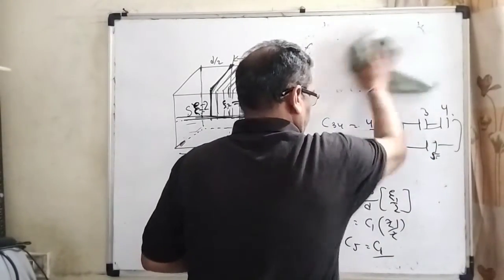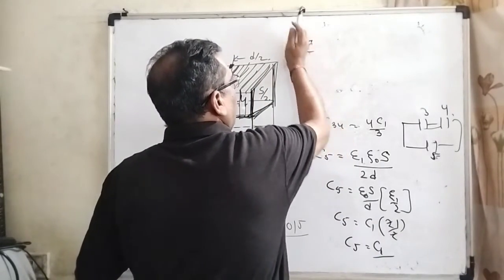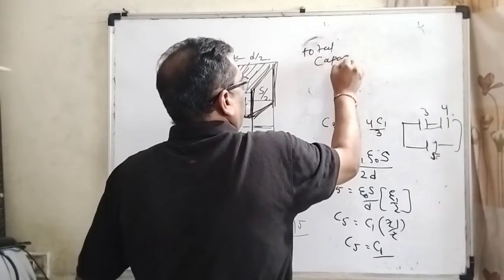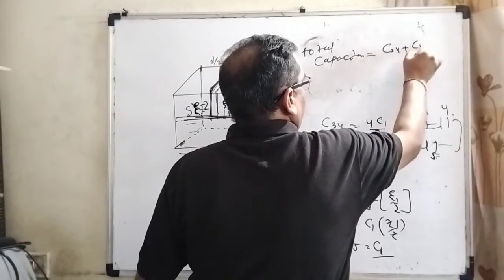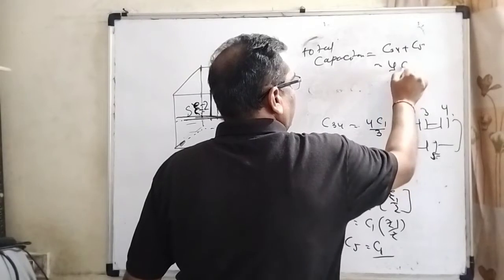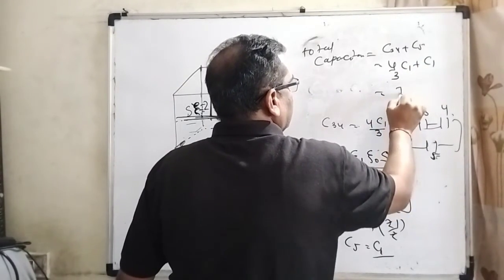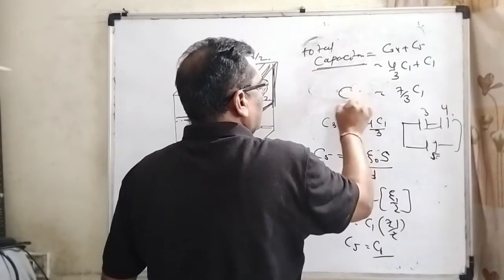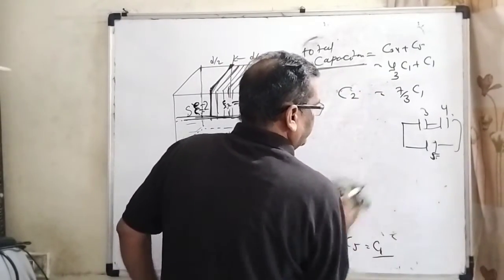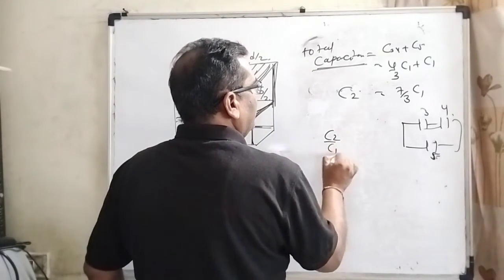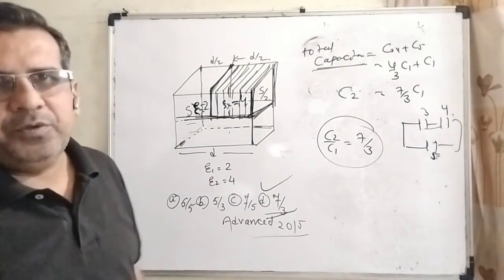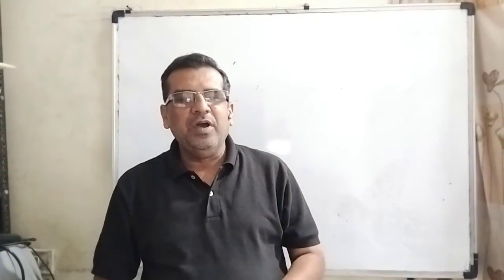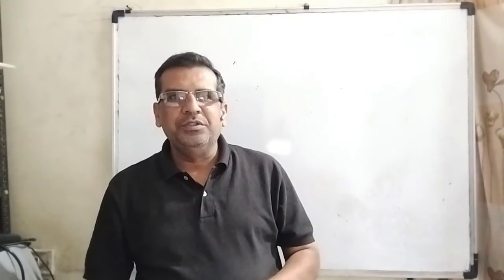So the total capacitance C2 equals C3,4 plus C5, which is 4C1 by 3 plus C1, giving 7C1 by 3. Therefore, C2 by C1 equals 7 by 3, so option D is the correct answer. I hope you understood this question. Thank you for staying till the end of this video — don't forget to subscribe to my channel. Take care, bye bye.